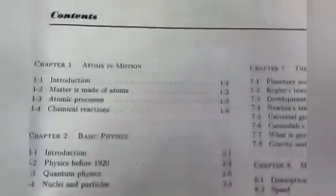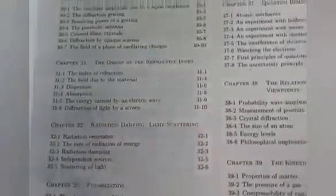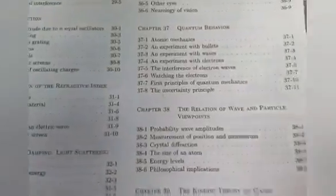These are the chapters in volume 1: atoms in motion, basic physics, relation of physics to other sciences, conservation of energy, time and distance, probability, theory of gravitation, motion, Newton's laws of dynamics, conservation of momentum, vectors, characteristics of force, work and potential energy, special theory of relativity, relativistic energy, and so on. These are the chapters of this book, volume 1.